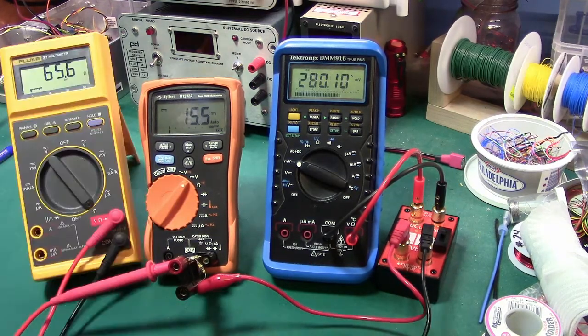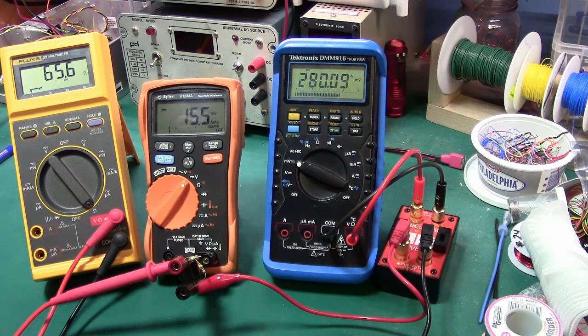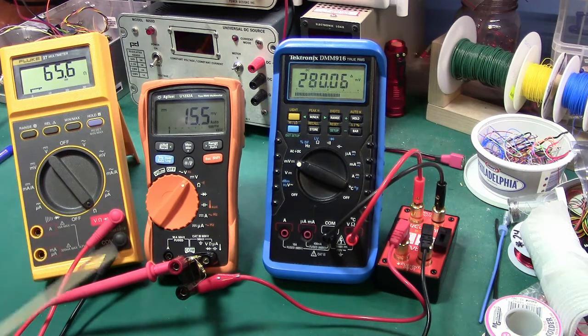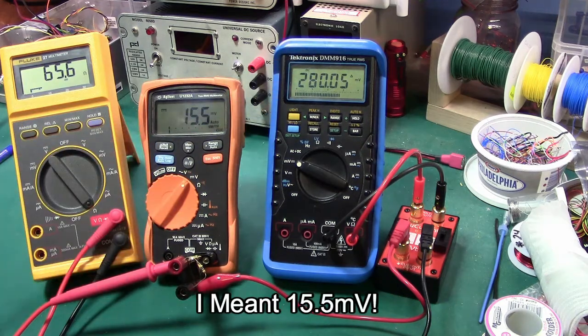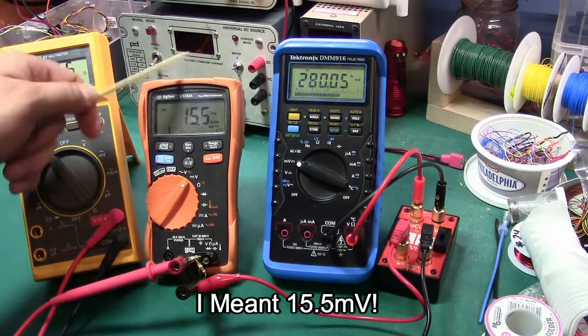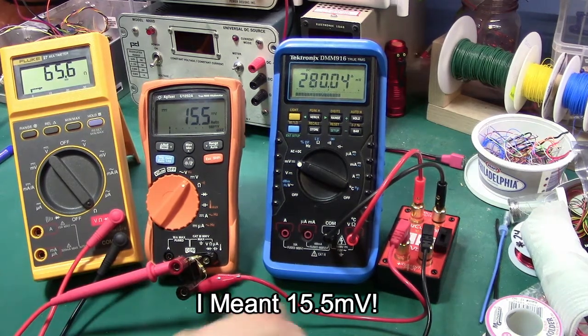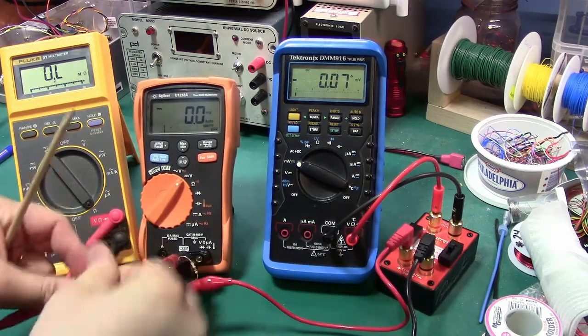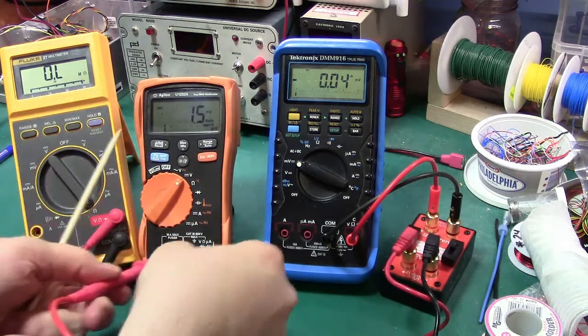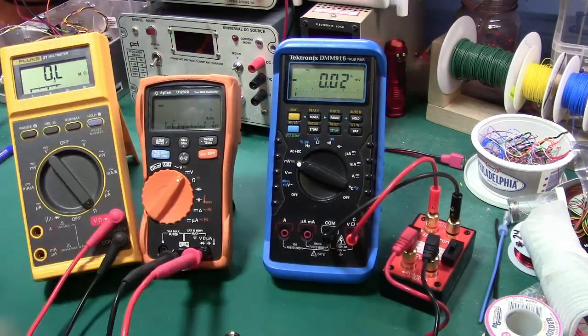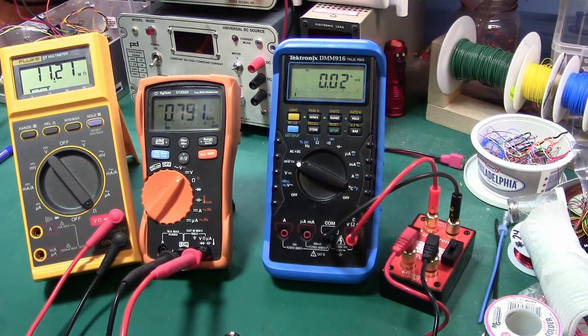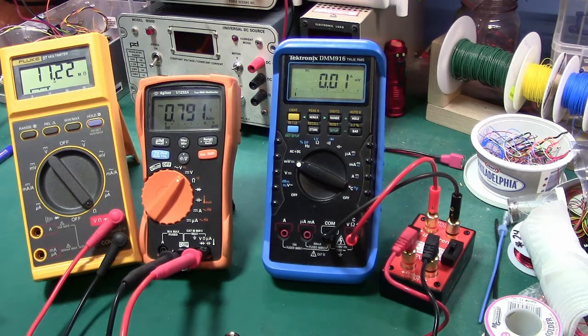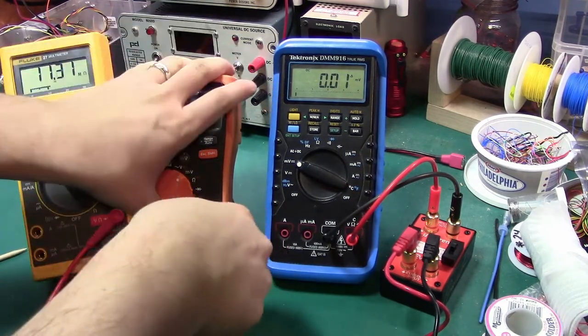Let's go get another meter. Here we have the Fluke 27, I love this meter, it's like a brick, it's fantastic. Same setup except this time this one's sourcing about 280 microamps in the ohms mode with a drop about 150 millivolts. If you look at the open circuit voltage that's approximately 0.8 of a volt, which is not that big a deal but it might turn on a couple of diodes, so we'll set this up and measure that.